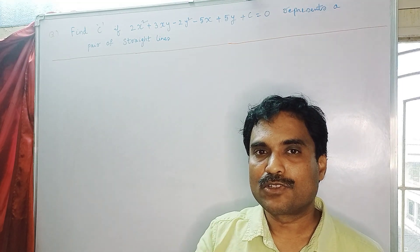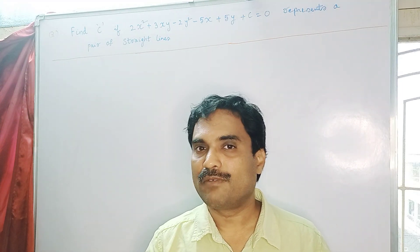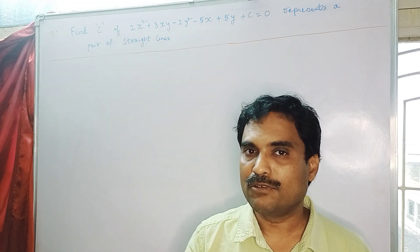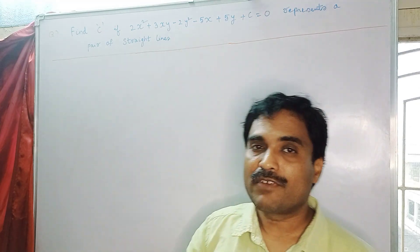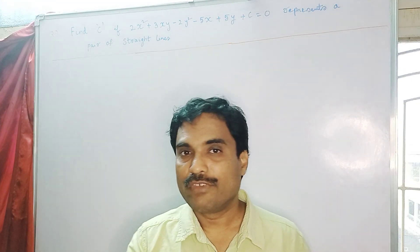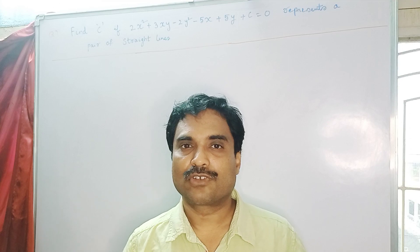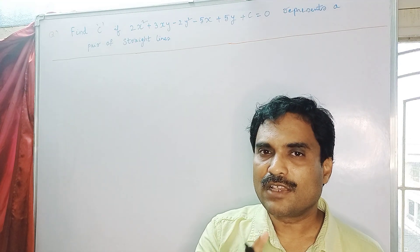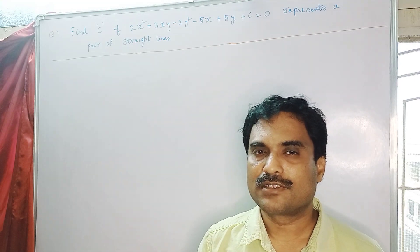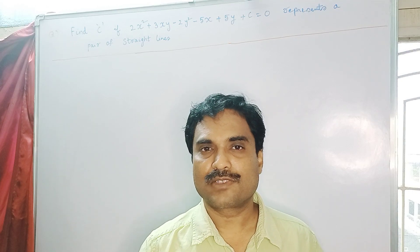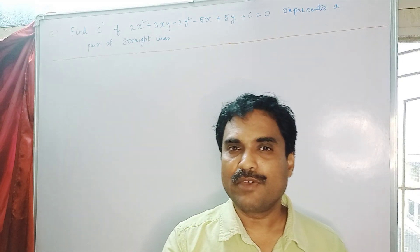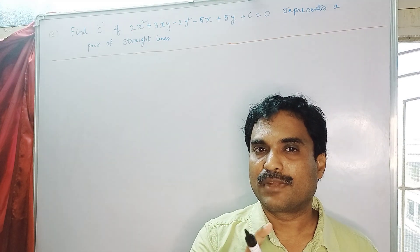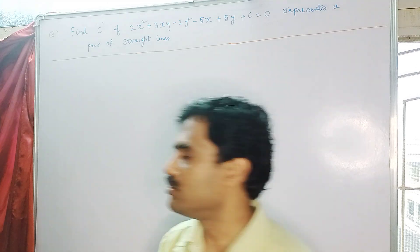To get the values of a, h, b, g, f, and c, you have to compare the given equation with the general equation of the conic. The general equation of conic is: ax² + 2hxy + by² + 2gx + 2fy + c = 0.